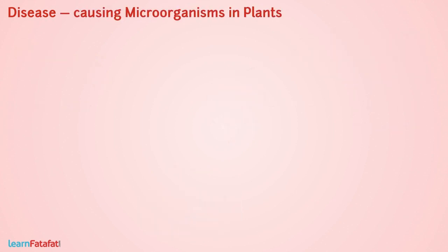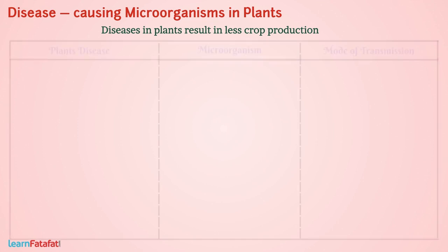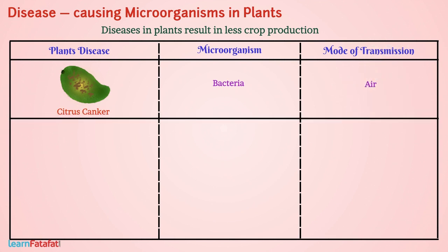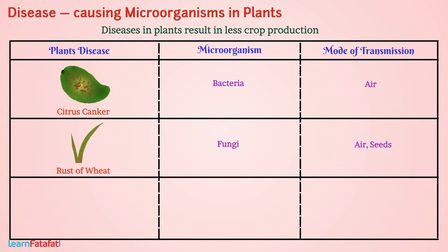Disease-causing microorganisms in plants. Diseases in plants result in less crop production. Citrus canker is caused by bacteria and transmitted through air. Rust of wheat is caused by fungi and transmitted through air or seeds. Yellow vein mosaic of okra (bhindi) is caused by a virus and transmitted by insects.